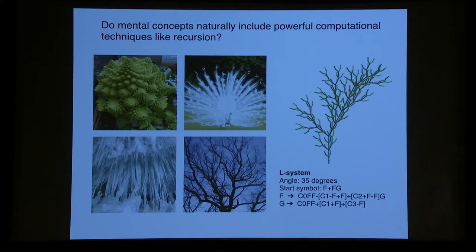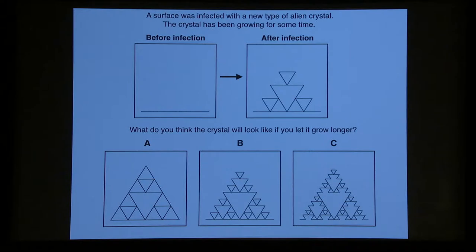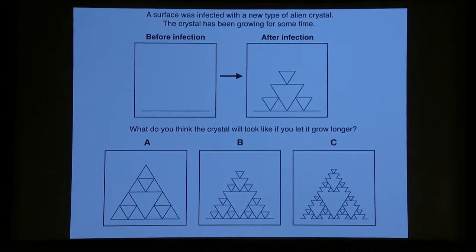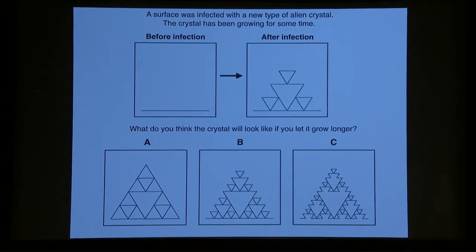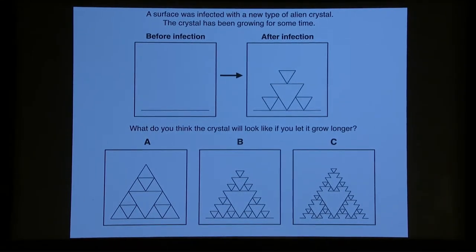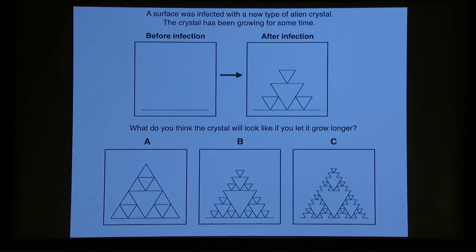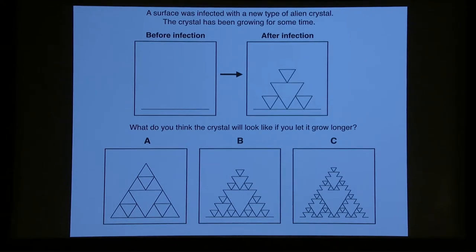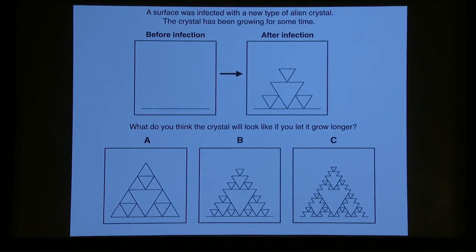So how do people learn concepts like this, and do they learn programs? To examine this question, we can't use trees. We're going to run behavioral experiments here and try to get at it. We have to use novel concepts that people don't already know, but we can define the concepts in a similar language, so the one I showed you on the previous slide, or define them using these L-Systems, and test the limits of the human ability to learn from a very small number of examples.